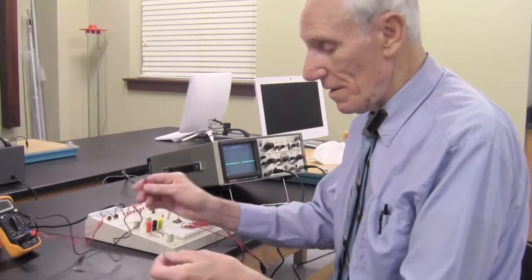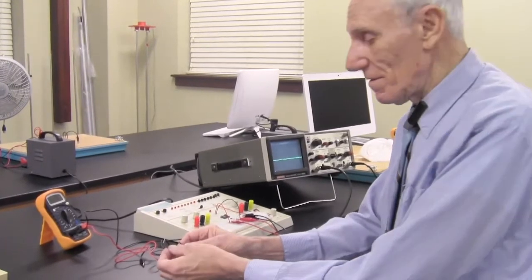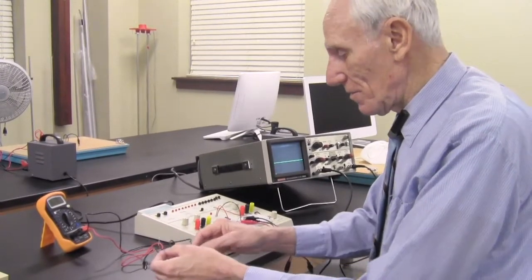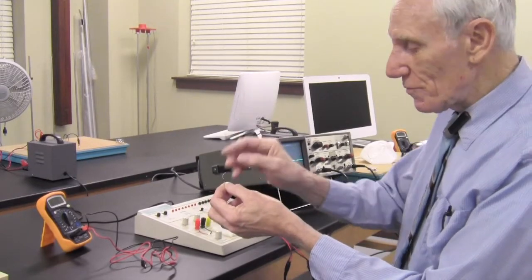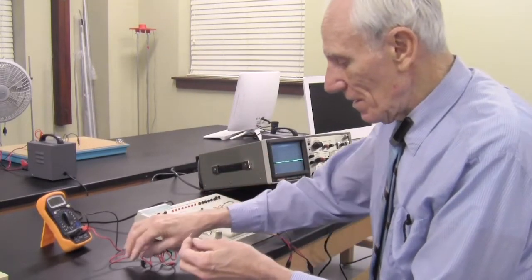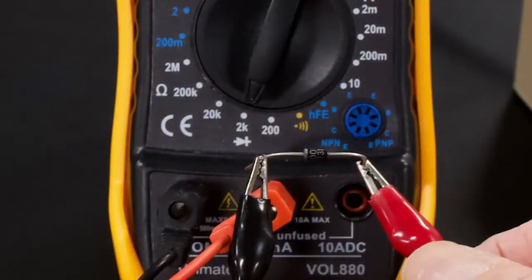I guess before we do that, we should check the diode for its junction potential. So here's the diode. You can't see it, but the banded end is pointing up this way, which is the negative end. So I'm going to connect the negative lead from my voltmeter to the negative end and the positive lead to the positive end.